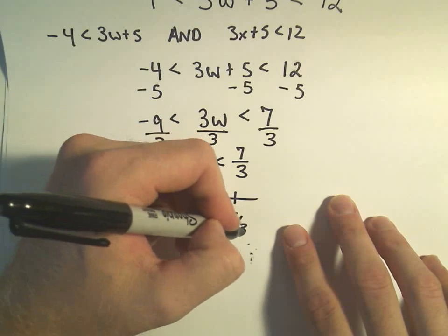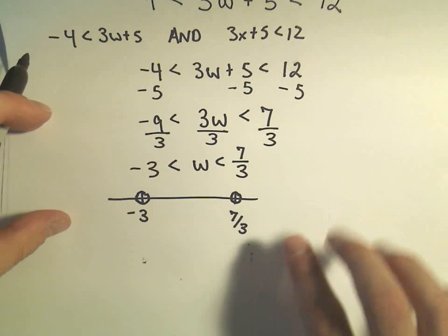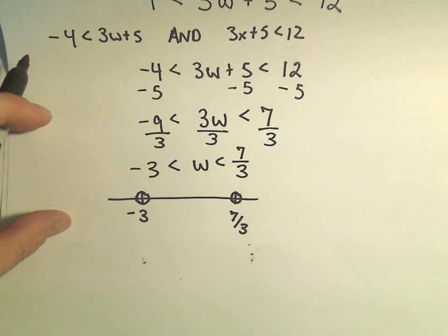And it says 7 thirds. That's something positive over there. I'm going to put an open circle. Sometimes people have a tendency to want to put 0 in the number line. I think it's just a point of reference. I just put the numbers that I'm using.